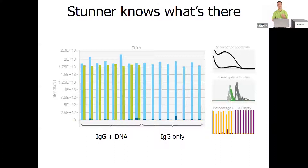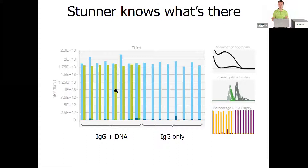If we try to fake out Stunner, in this case we're using IgG and DNA to simulate a full capsid, or IgG alone to simulate an empty capsid. Stunner actually knows what's there. Because the signals, when combined, don't make sense as capsids, Stunner tells us that this is actually free protein and free DNA — shown by the light blue and light green colors representing non-capsid material. Likewise for IgG only, it looks like extra protein with no DNA detected. Stunner can identify differences between actual AAV capsids and other material.